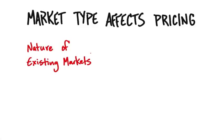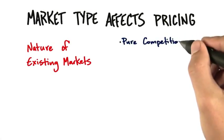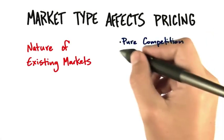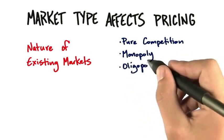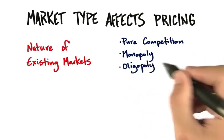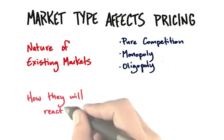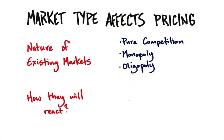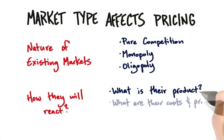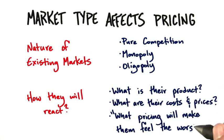But if we're in an existing market, we've got to think about competition. Is there a monopoly? Is there a duopoly, an old monopoly? That is, are there dominant players that really shape the pricing in our market? And what we really want to understand is what's their product, what are their costs and prices, and what pricing will make them feel the worst?